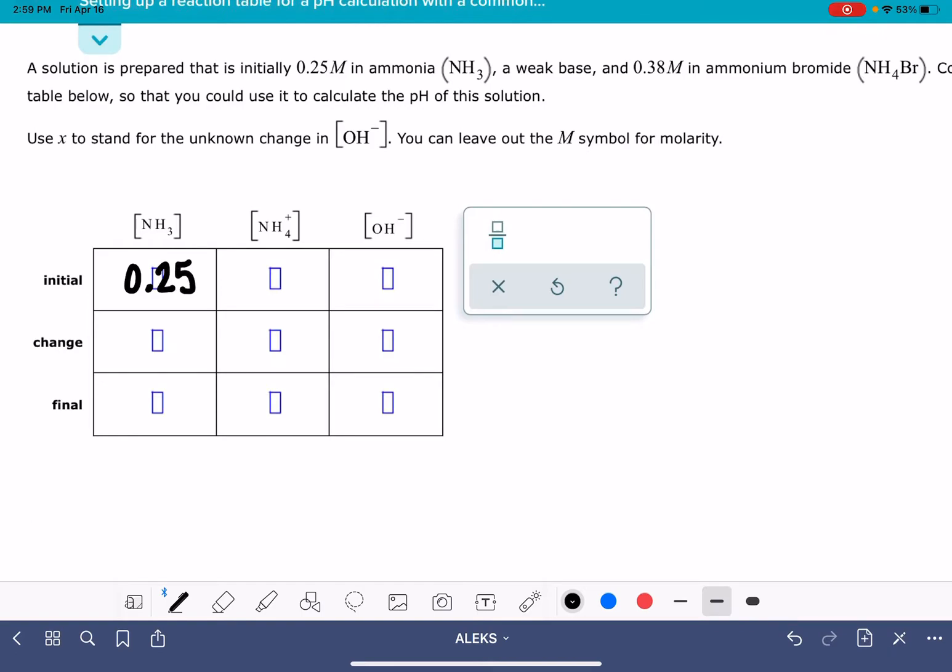And that also tells us that we have 0.38 molar ammonium bromide, NH4Br. Now, you have to recognize that that NH4Br is going to dissociate into the ammonium, NH4+, cation, and the bromide anion, Br-,